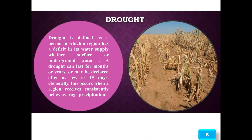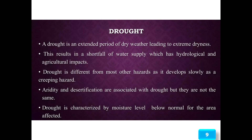Drought is defined as a period in which a region has a deficit in its water supply, whether surface or underground water. A drought can last for months or years, or may be declared after as few as 15 days. Generally, this occurs when a region receives consistently below-average precipitation. As shown in the diagram, drought conditions are visible in agricultural field areas.